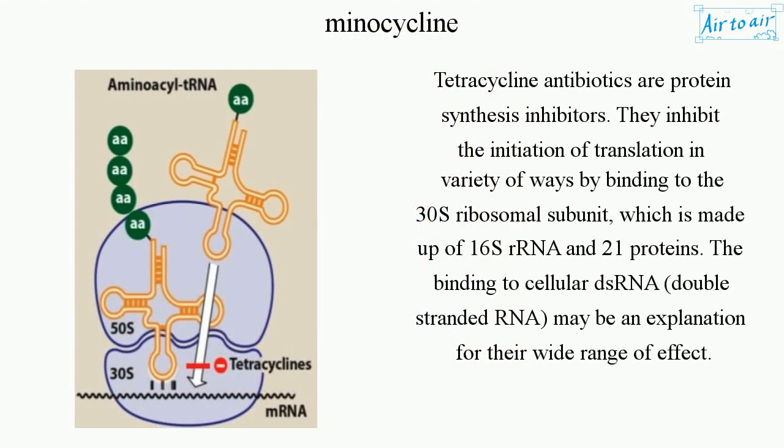Tetracycline antibiotics are protein synthesis inhibitors. They inhibit the initiation of translation in a variety of ways by binding to the 30S ribosomal subunit, which is made up of 16S rRNA and 21 proteins. The binding to cellular 16S rRNA may be an explanation for their wide range of effect.